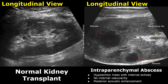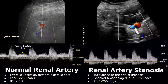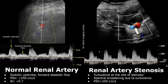Here is a normal renal artery and its spectral Doppler in a renal transplant. The waveform has a systolic upstroke and forward diastolic flow. The peak systolic velocity should be less than 250 centimeters per second in normal cases, and the resistive index should be less than 0.7.